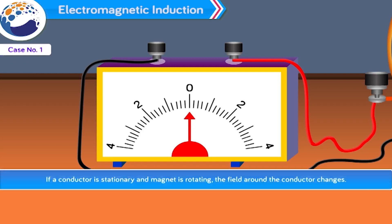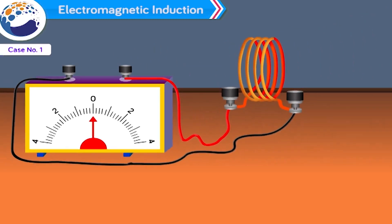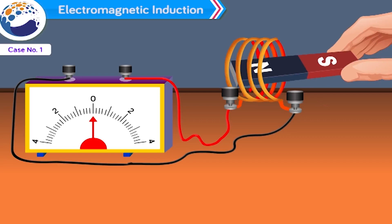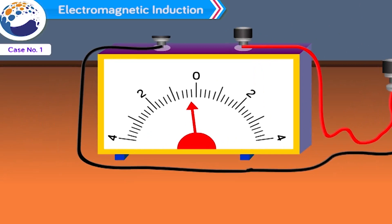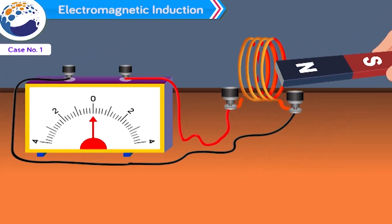Case number one: If a conductor is stationary and magnet is rotating, the field around the conductor changes. Now take a bar magnet and move it across the coil facing north pole towards the coil. You will observe that there is a deflection in the galvanometer indicating current is generated in the coil. Now if you move magnet away from the coil, you will again get deflection, but in opposite direction.